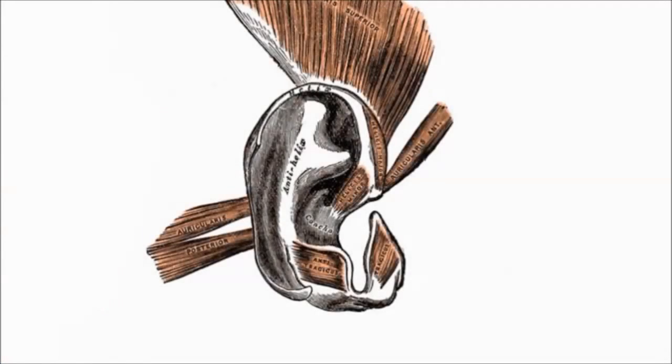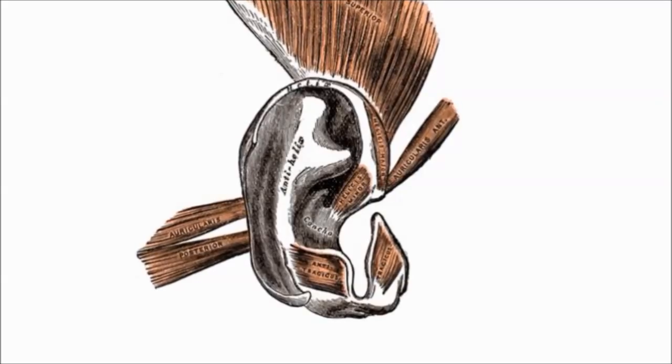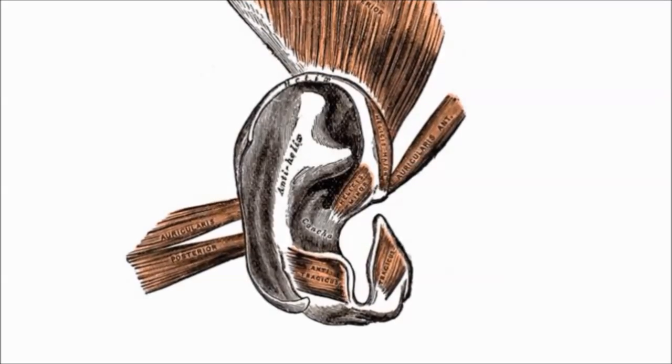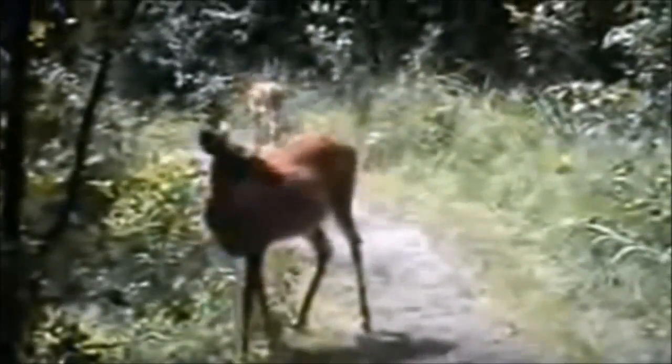Humans also have remnants of ear-wiggling muscles. There are three small muscles around each of the human ears that apparently have no function whatsoever. In other mammals, these muscles are often enlarged and serve an important function, such as in deer, that use them to turn their ears toward a source of sound. However, few humans can wiggle their ears and none can turn them toward sound.